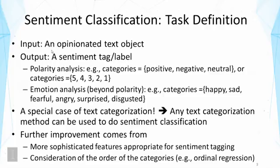Sentiment classification can be defined more specifically as follows. The input is an opinionated text object. The output is typically a sentiment label or sentiment tag, and that can be designed in two ways. One is polarity analysis, where we have categories such as positive, negative, or neutral. In polarity analysis we sometimes also have numerical ratings, as you often see in some reviews on the web — five might denote the most positive and one the most negative, for example.